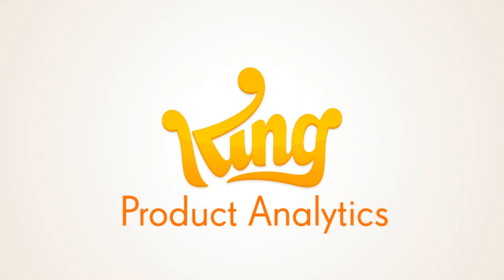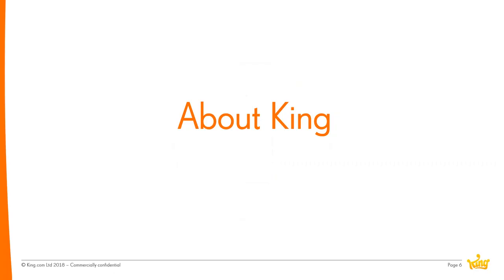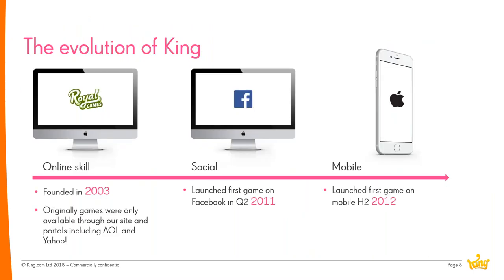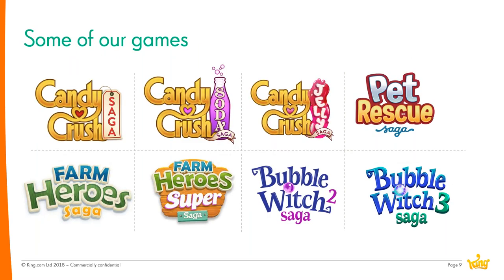Ian Thompson works at King, a leading interactive entertainment company for the mobile world. King has created over 200 titles and last year reported 270 million monthly active users, with offices all over the world, the majority of employees in Europe. King is 15 years old, initially creating competitive player-versus-player skill games, and seven years ago launched its first title on Facebook with a mobile release a year later.